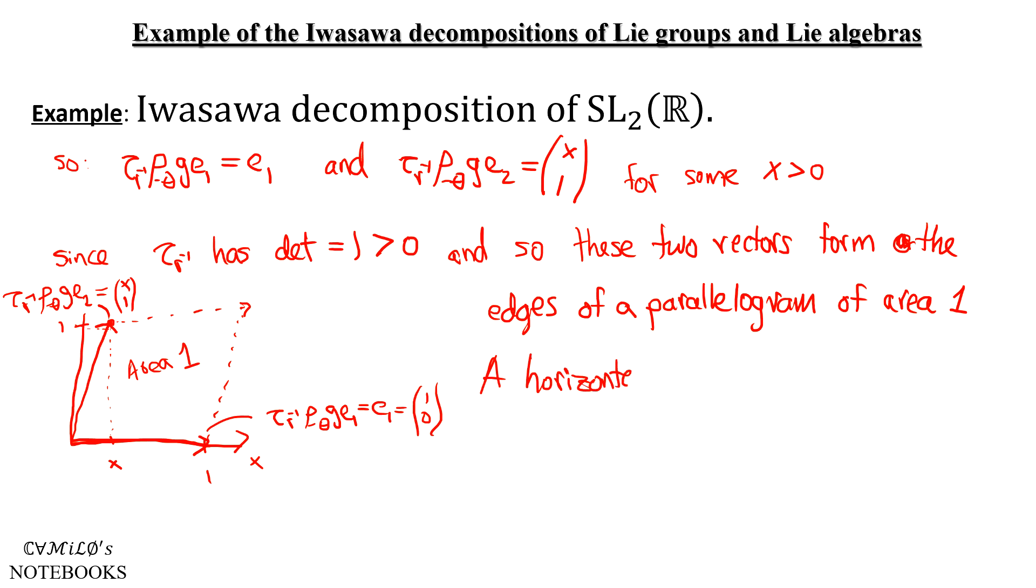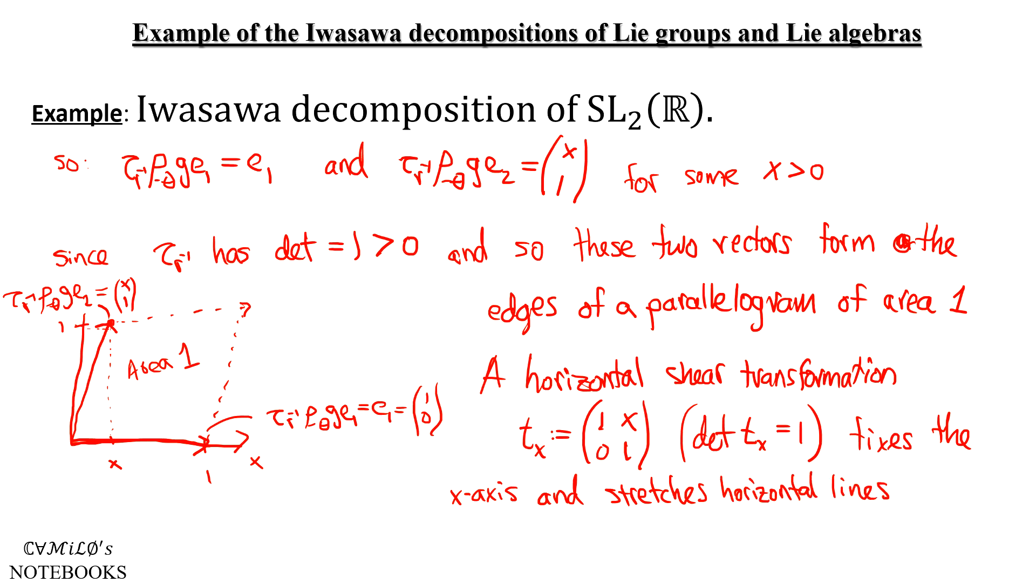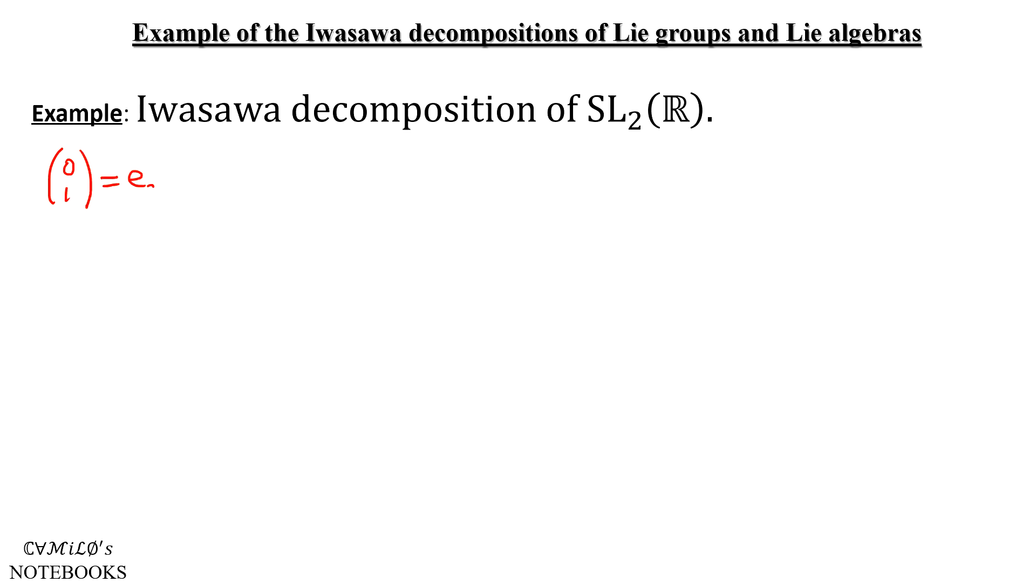Finally, all we need is a horizontal shear transformation. And we'll call them T_X from before, which all have determinant 1, clearly. And they fix the x-axis while translating horizontal lines left or right by a value of X. So applying T_{-X} to τ ρ G times E₂, it'll take this vector (X, 1) exactly to the basis vector (0, 1), because we're just subtracting off the X in the first component.